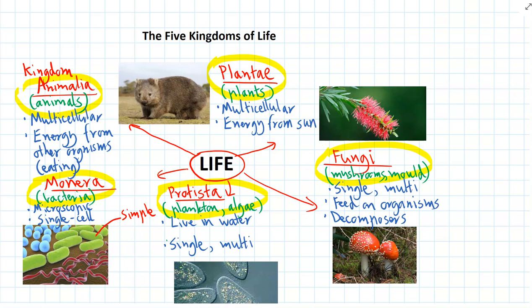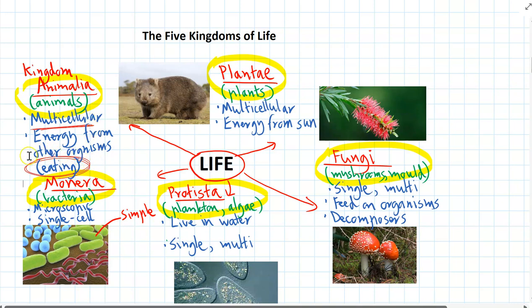The animal kingdom — Kingdom Animalia — all animals are multicellular. The key thing that makes an animal an animal is they have to get their energy from other organisms by eating. We need to eat every day to get our energy, because that's the only way we can get energy as an animal.